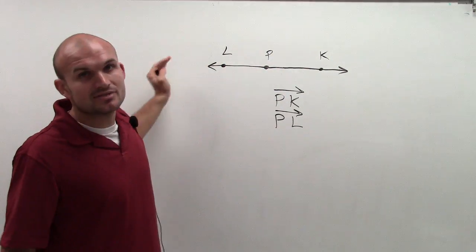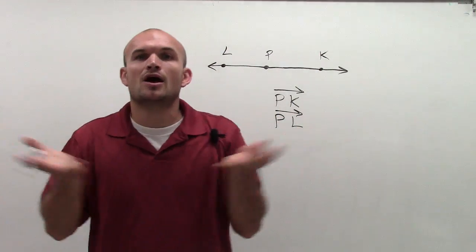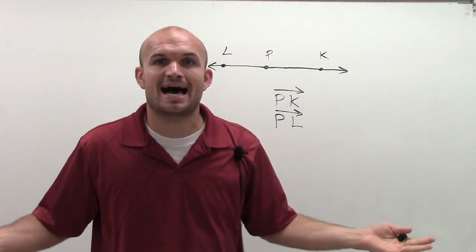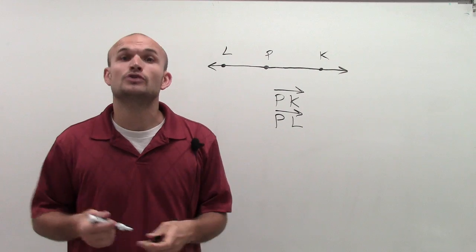It still continues infinitely. But now, when I put these two opposite rays together, what I have done is I've created a line. And whenever you have two rays that create a line, you have opposite rays.